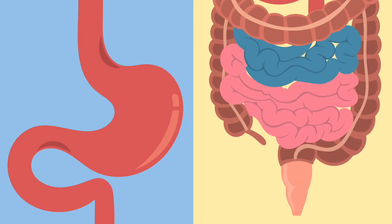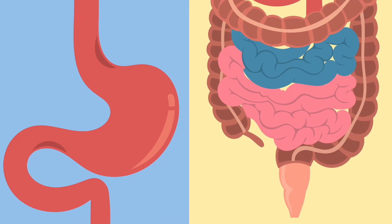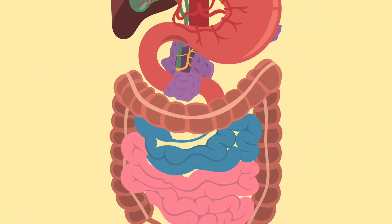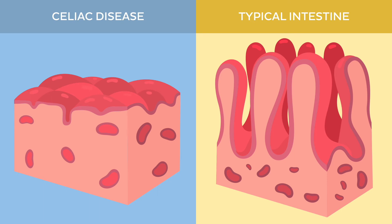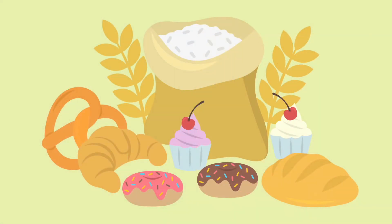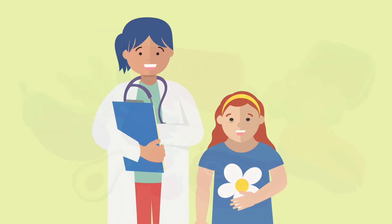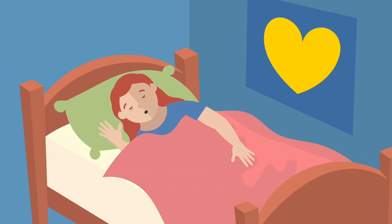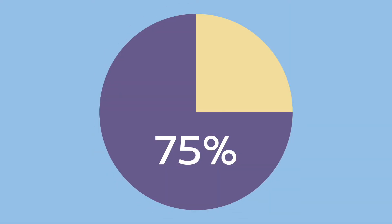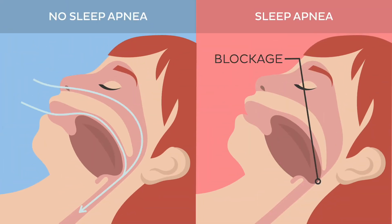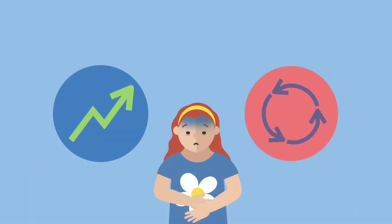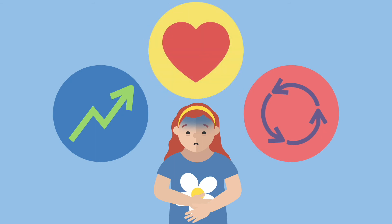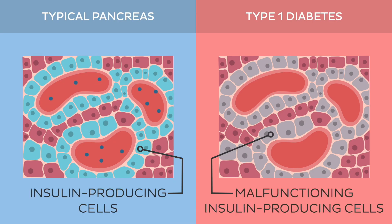Reflux disease and constipation can also occur, and sometimes surgery is needed if digestive organs are abnormally formed and obstruct the gastrointestinal tract. Celiac disease can be a challenge too — an autoimmune condition affecting their ability to absorb nutrients, making them intolerant to gluten, though a healthy diet and monitoring can help manage it. Up to 75% of individuals with Down syndrome can have sleep apnea, causing interrupted breathing during sleep. They're also at higher risk for hormonal problems: difficulty producing thyroid hormone is common, leading to hypothyroidism that can impact growth, metabolism, and wellbeing, and they have a higher risk of developing type 1 diabetes, which requires insulin injections throughout their lives.